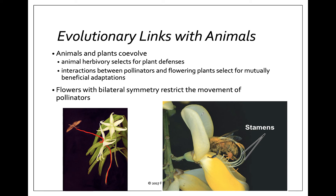Here's another example: a bilaterally symmetric flower where, in order for the bee to get to the nectar, it has to stick its head in. The stamens are actually curved back so they place the pollen grains on the fuzzy back of the bee, knowing that the bee will then take the pollen to another flower and hopefully reach the pistil.